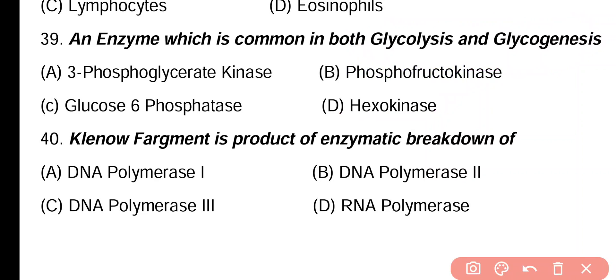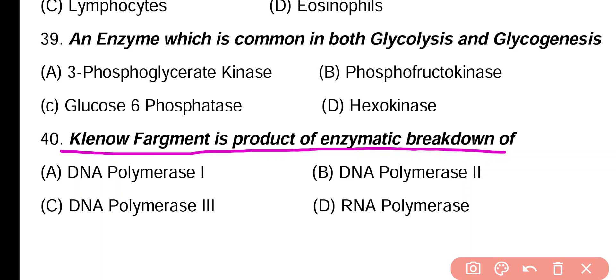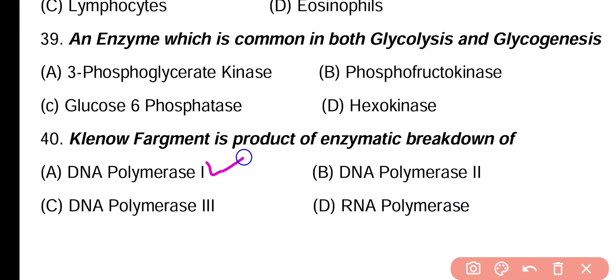Question 40. Klenow fragment is the product of enzymatic breakdown of: DNA polymerase 1, polymerase 2, polymerase 3, RNA polymerase. Correct answer is option A. Through the enzymatic breakdown of DNA polymerase 1, we obtain the Klenow enzyme or Klenow fragment.